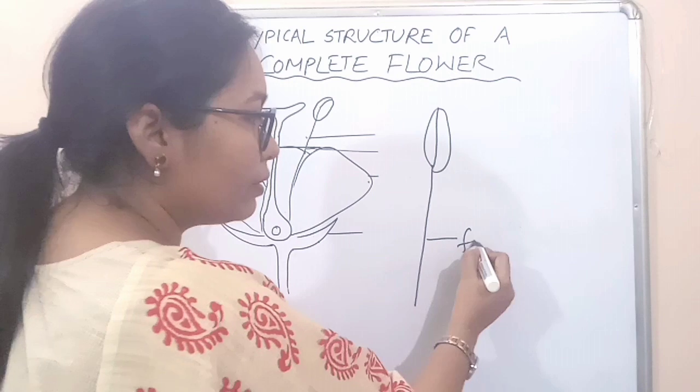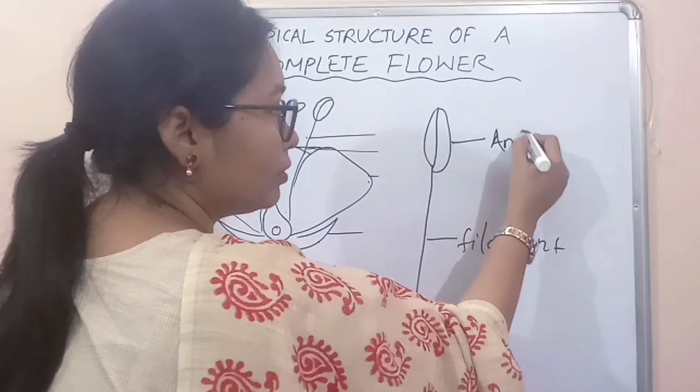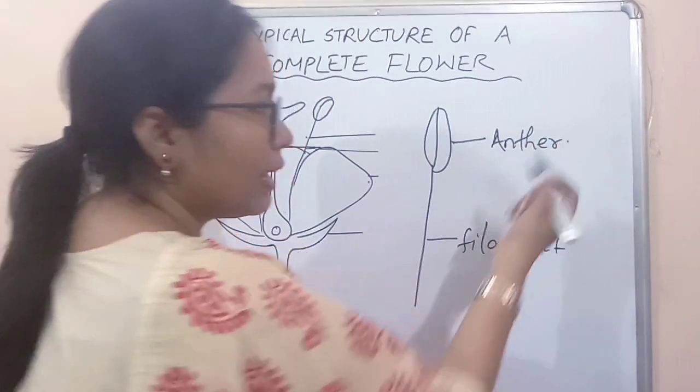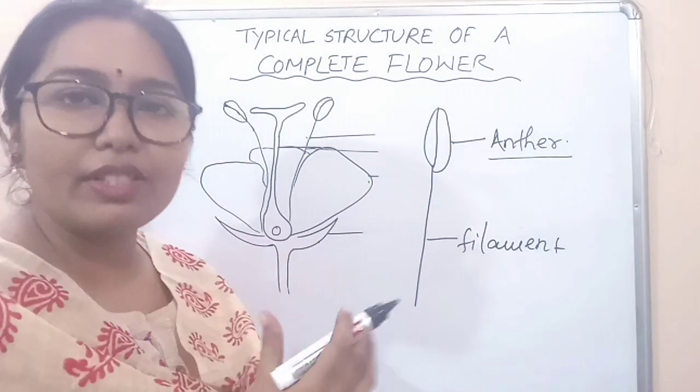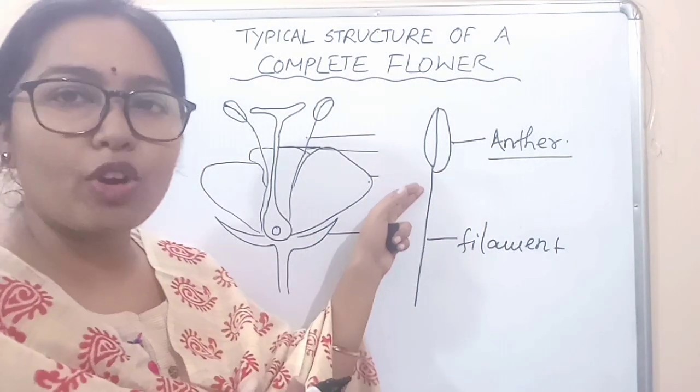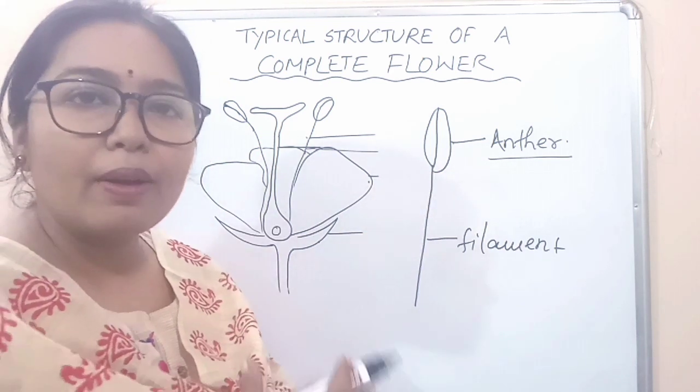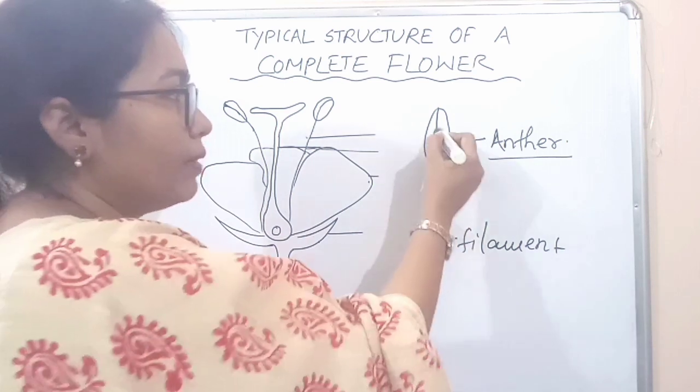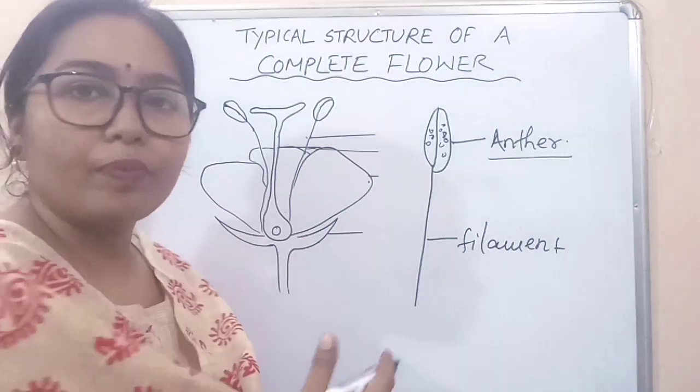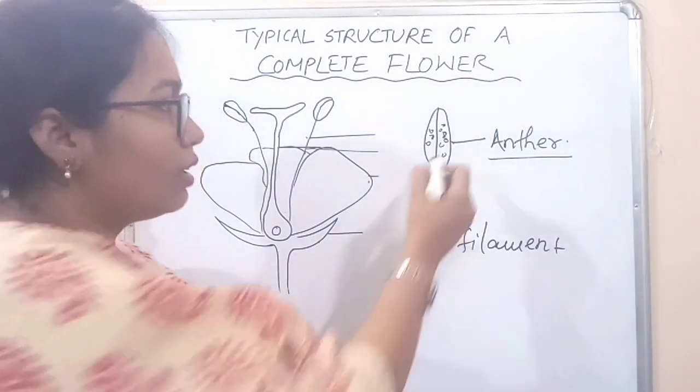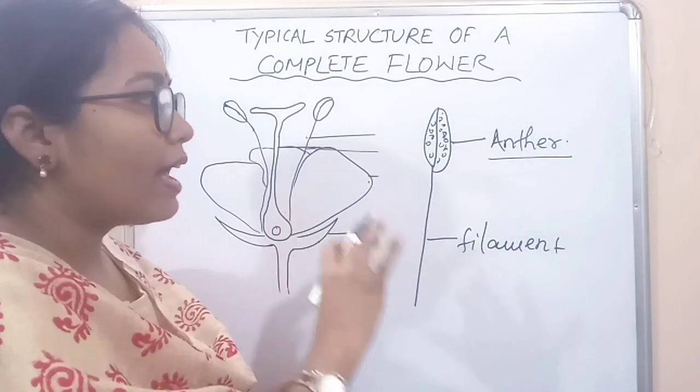filament and anther. The anther may be of different structures and typically it is drawn as it is. Inside the anther there are numerous pollen grains. They are arranged inside the anther and contain the male gametes.